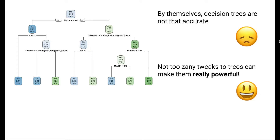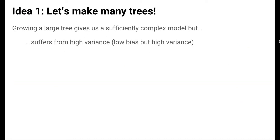It turns out that there are tweaks that we can make to trees that aren't too zany or weird that can make them very powerful in terms of predictive ability. We'll look at two of these ideas in this video. The first idea is the idea of making many trees. A single decision tree is not that accurate by itself, but can we make many trees? Growing a large tree is nice in that it gives us a sufficiently complex model, but we know that complex models suffer from high variance. This is the bias-variance trade-off in play.